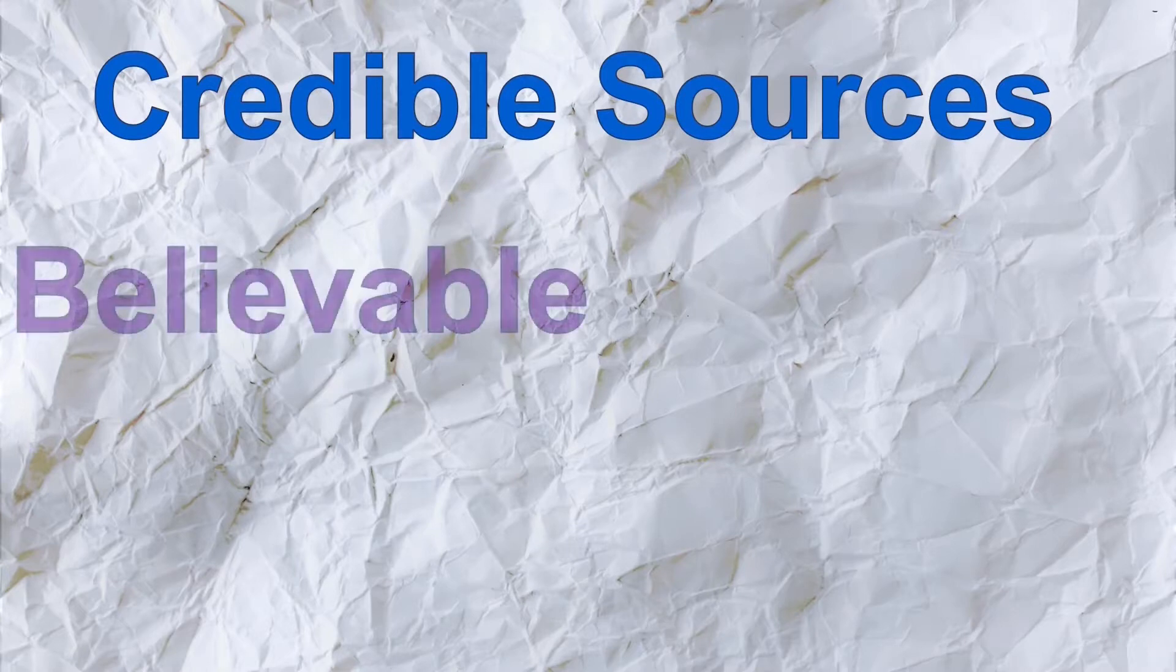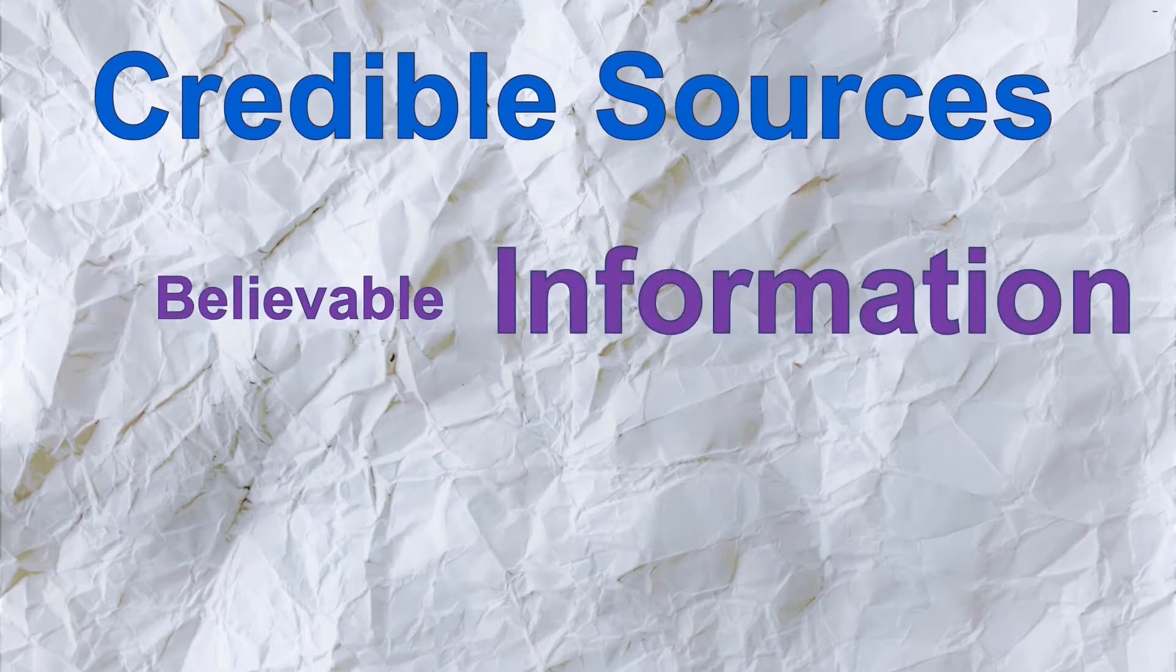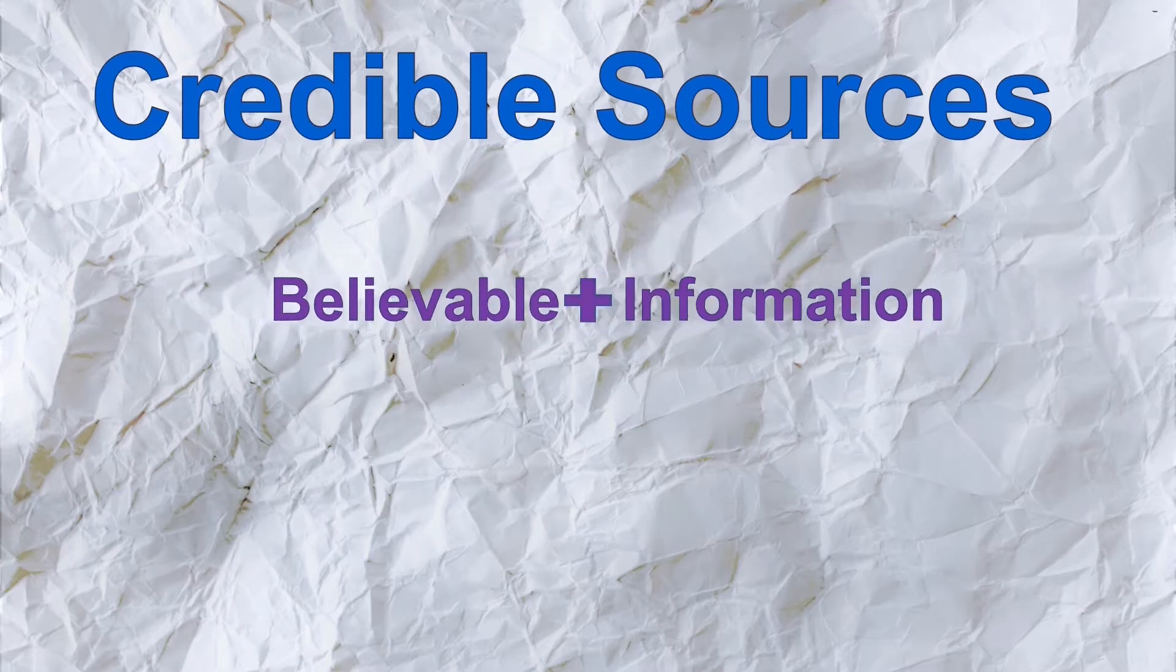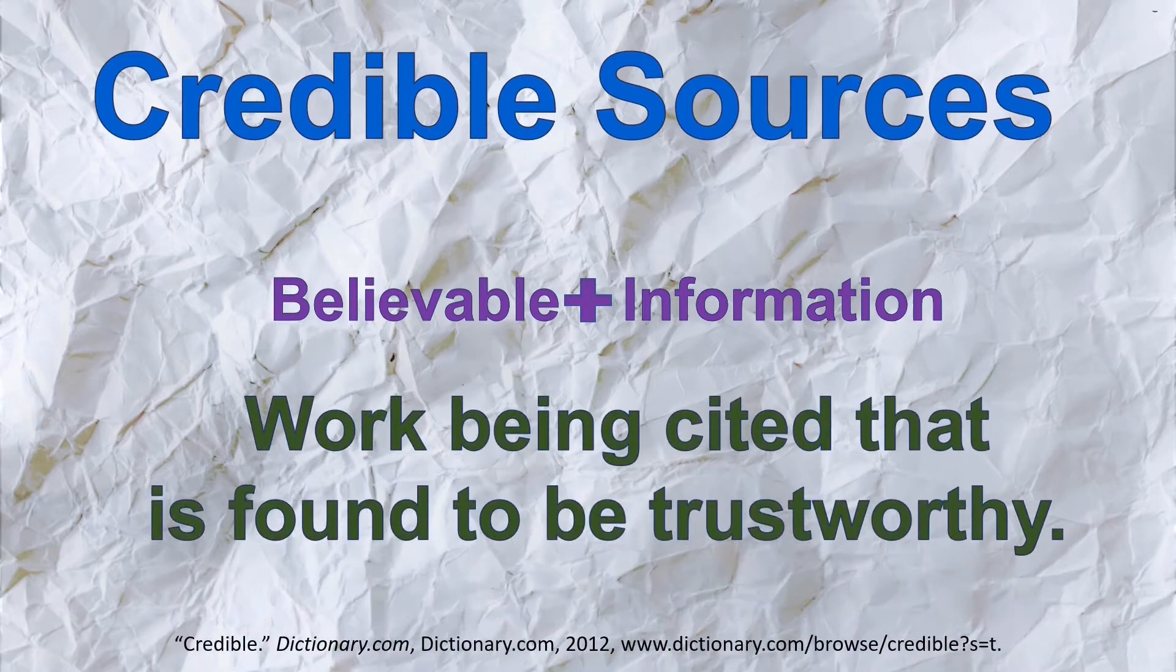First, let's talk about what the phrase credible source means. According to Dictionary.com, the word credible means capable of being believed, believable. A source is where we go to attain our information, whether you are performing your own research through polling or experimentation, or reading someone else's work to use in your research. Putting the two ideas together, we can conclude that a credible source is work being cited that is found to be trustworthy.